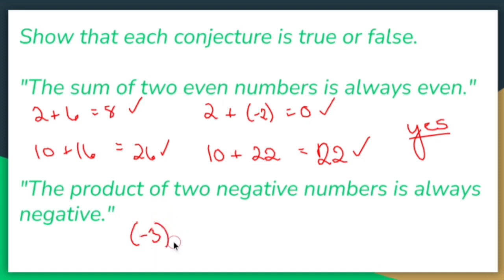Negative three times negative four is positive 12. Well, here it says the product of two negative numbers is always negative. Well, immediately I try one of them and it's false.